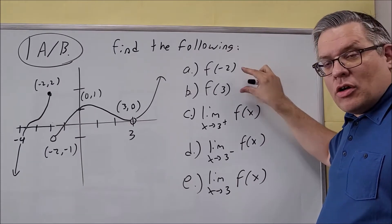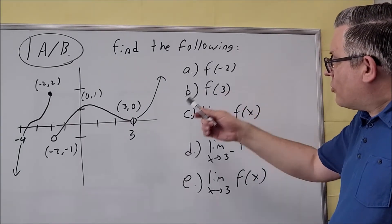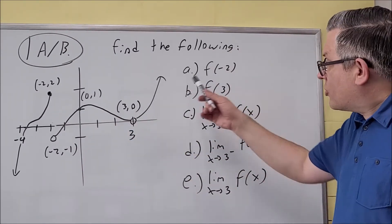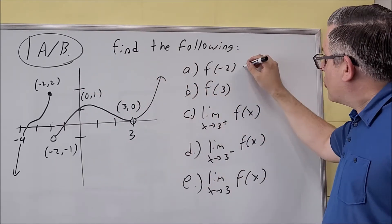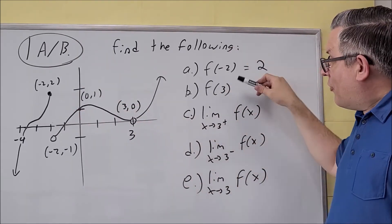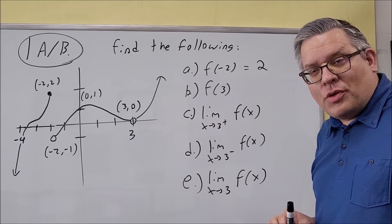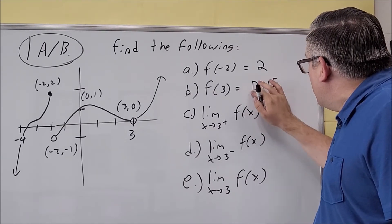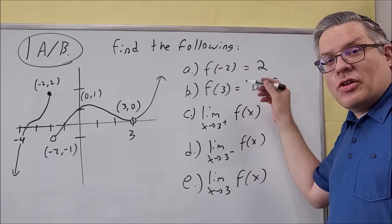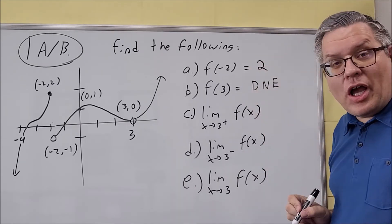These function value questions only have answers if there's a closed circle on the graph. For f of negative two, the answer is not negative one because that point has an open circle, so it doesn't exist there. The answer must be where there's a closed circle, which gives us two — that's the y-value when x equals negative two. For f of three, there's only an open circle, so the answer is DNE. For limits, it doesn't matter whether you're approaching a closed or open circle — you can still get an answer.